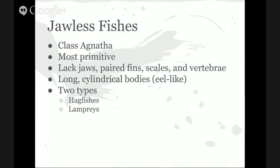Jawless fishes belong to class Agnatha, the most primitive of all the classes of fishes living today. Characteristics of jawless fishes: they lack jaws, and they feed by suction with a round muscular mouth and rows of teeth. They also lack paired fins, lack scales, and lack vertebrae. They do have long cylindrical, very eel-like bodies, and there are two types of jawless fishes alive today: hagfishes and lampreys.